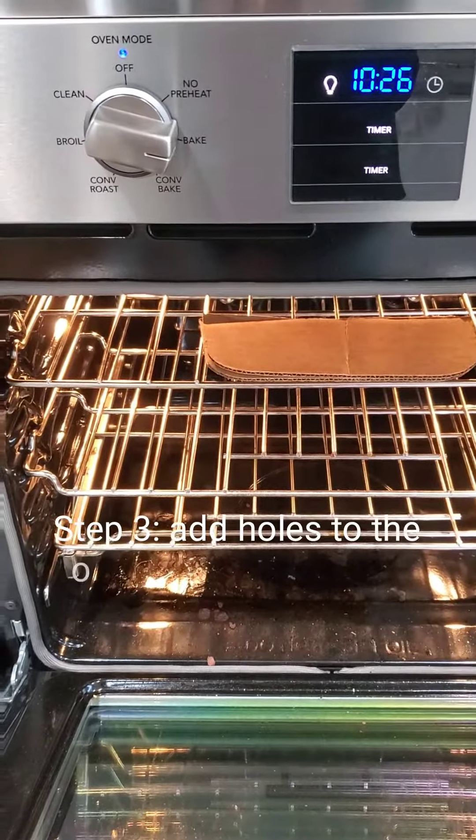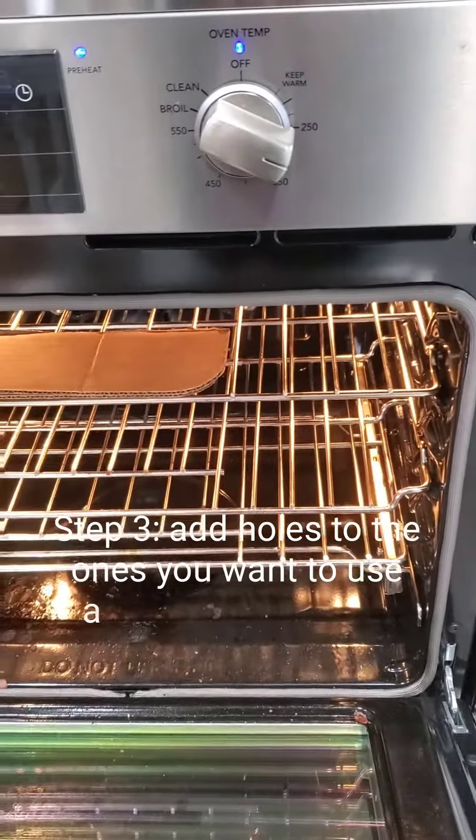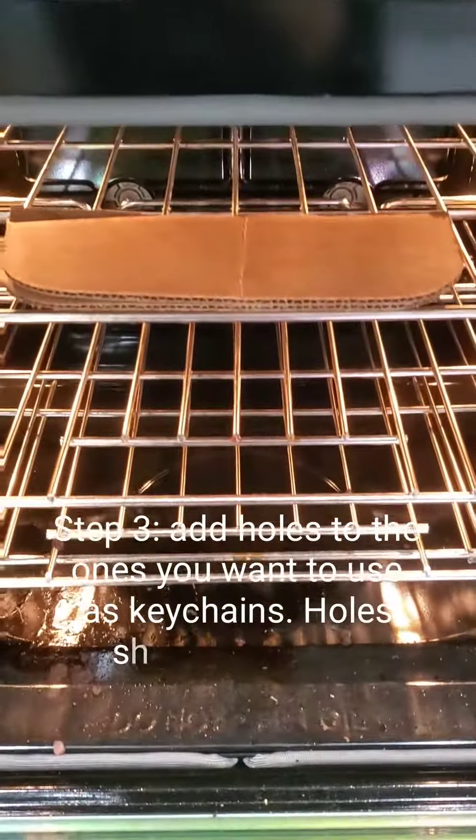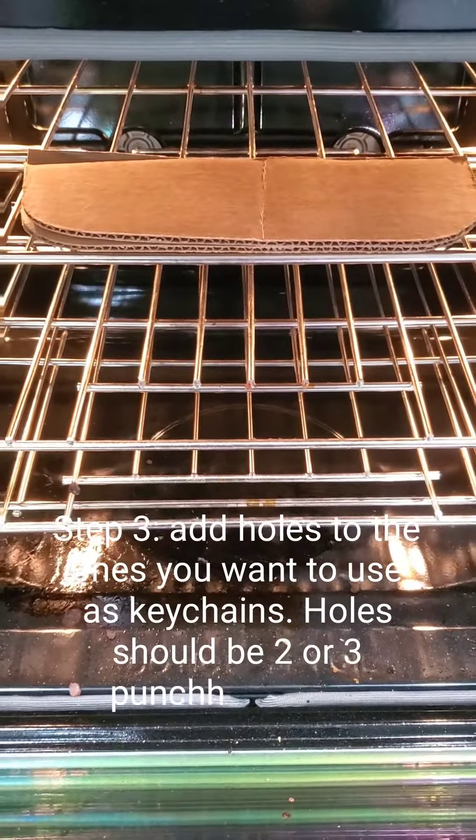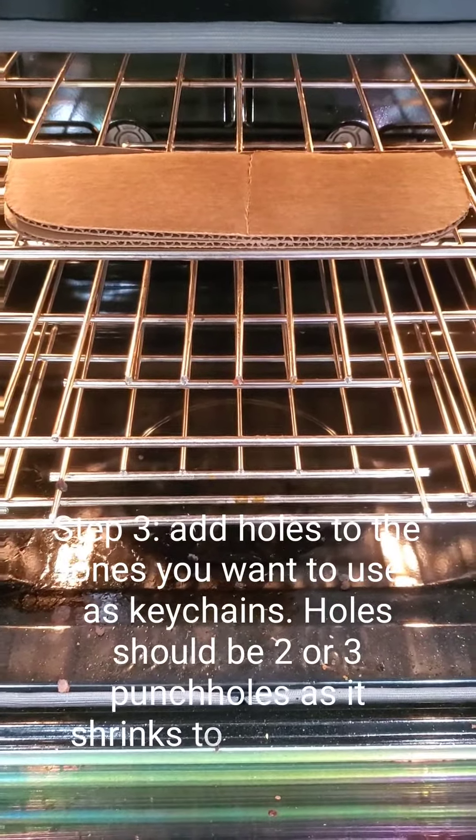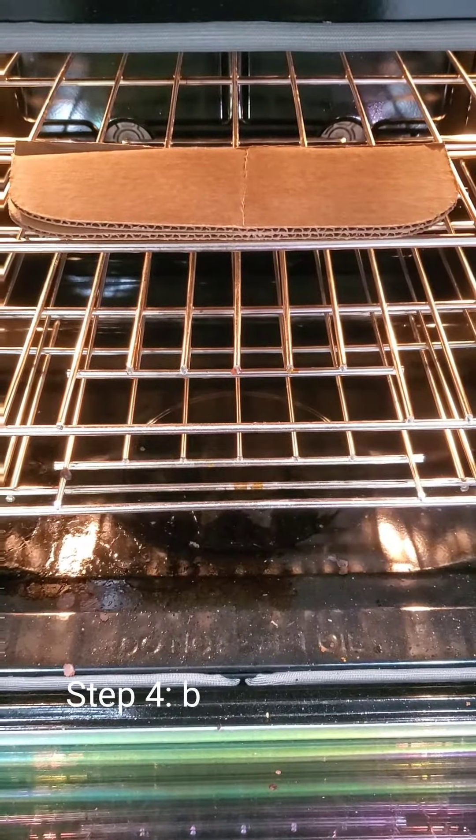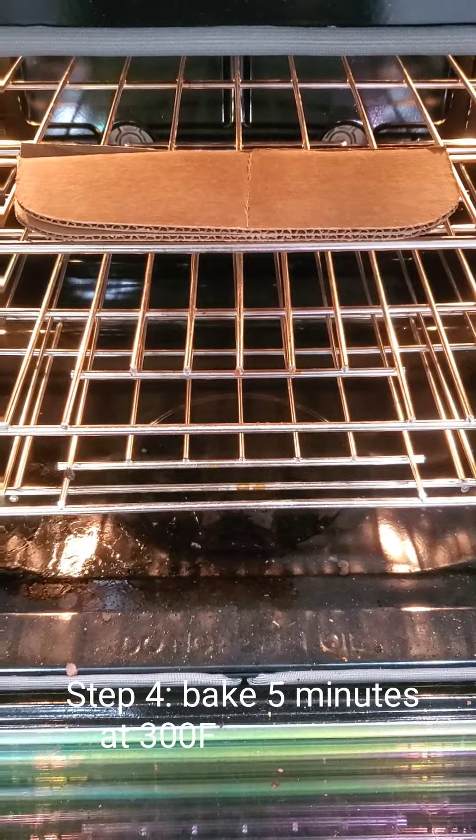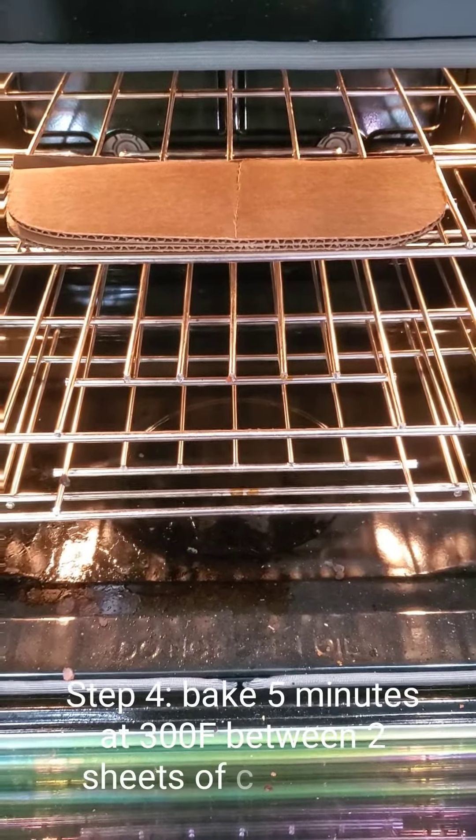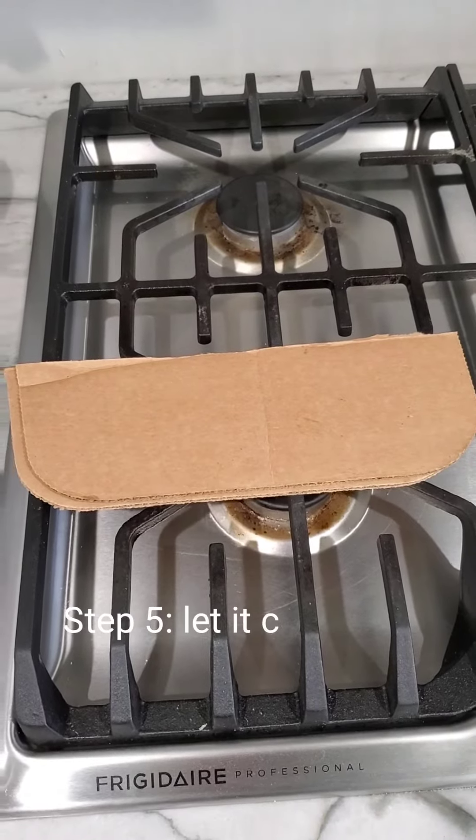Once you're done with your drawings, bake them at 300 degrees for five minutes. Place them between two cardboard slices—you can reuse the one from the box—to sandwich them so they don't curl up too much while baking.